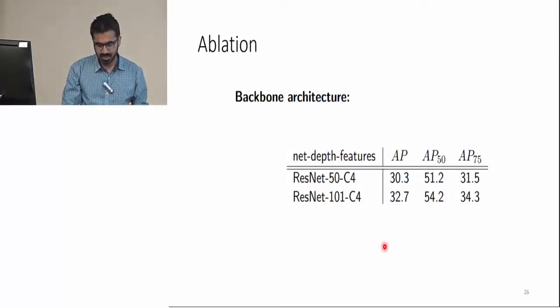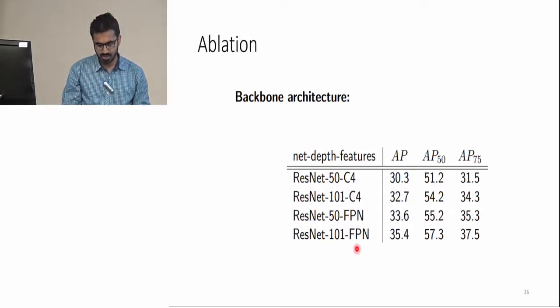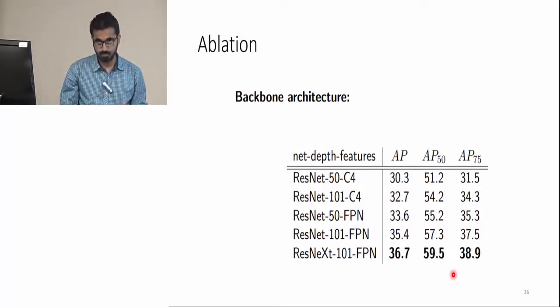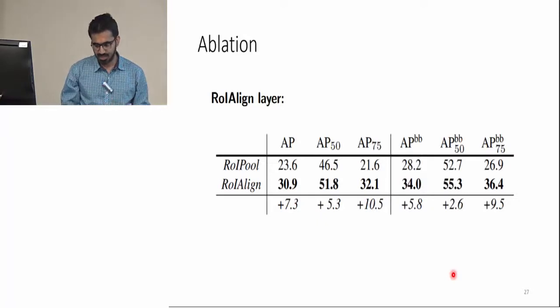Now some ablation experiments. As I discussed earlier, they experimented with a variety of backbone architectures. Here for the first two rows, they use ResNet-50 and ResNet-101, and C4 here indicates that they extracted the features from the fourth convolutional block. We can compare it with ResNet-50 and 101 with FPN architecture. These are the results for ROI align. As I discussed, ROI align does a better job at mask prediction, but it also does a better job at bounding box prediction.